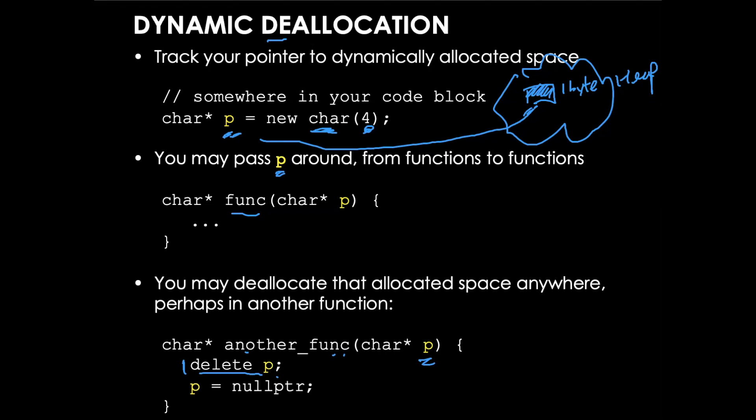This will release the memory that you have allocated, releasing this one byte of memory back to the process. That said, it is also a good idea to reassign the value of nullptr back into p. So later on before you do this new again...